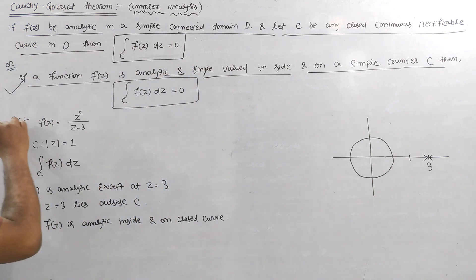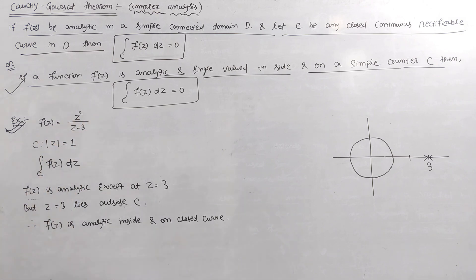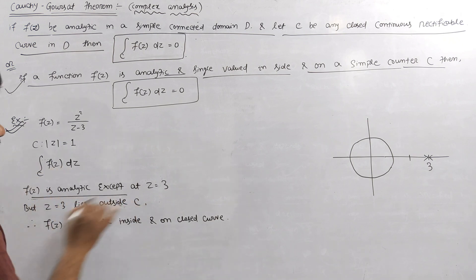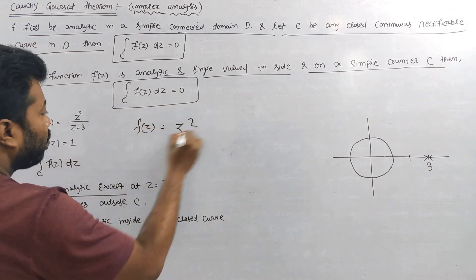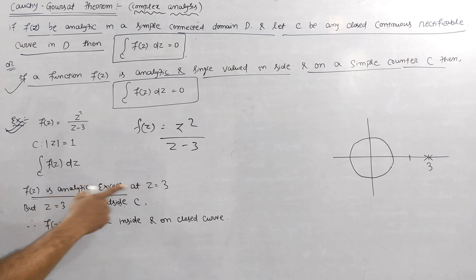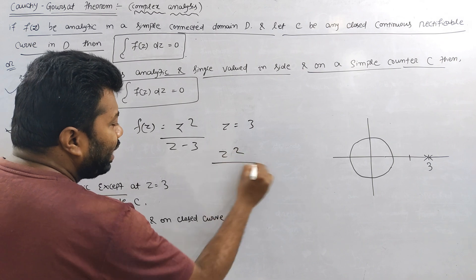Let's see if f(z) is equal to z² divided by (z minus 3). The function is single-valued. We call the integral of f(z) dz. Then f(z) is analytic. How do you say z² by (z minus 3)? The function f(z) is analytic except at z equals 3. Then z equals 3 is a singularity.